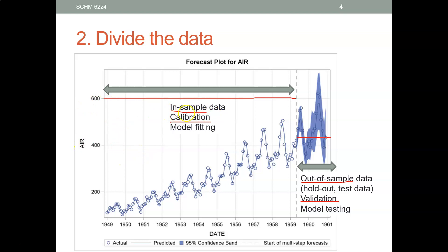You can calculate the forecast quality in the sample data. However, it is better to calculate the forecast quality in the holdout sample, because when you did the calibration, it gives you an artificial advantage in calculating forecast quality. Your time series will have around 700 or 800 observations. You can use the last 10 or 20 observations as your holdout sample or test data.